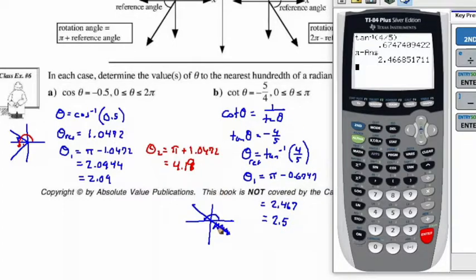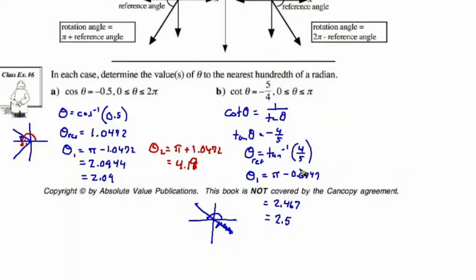We don't have to look at the other angle because that is not in the domain. I just made a mistake there — I said 2.5, but if it's to the nearest hundredth of a radian, then we should say this is actually equal to 2.47, not 2.5.